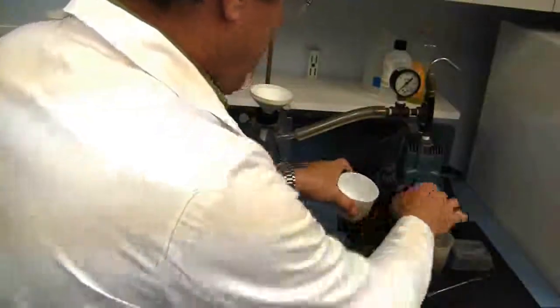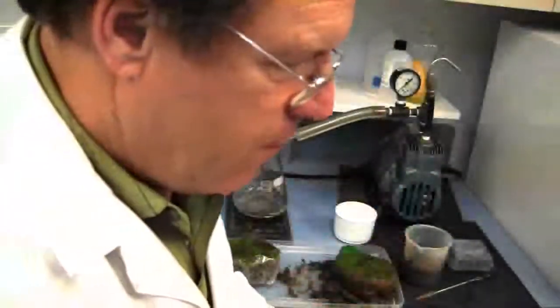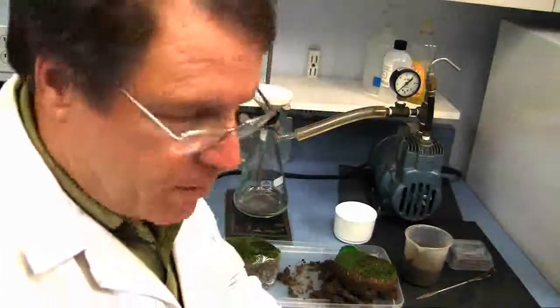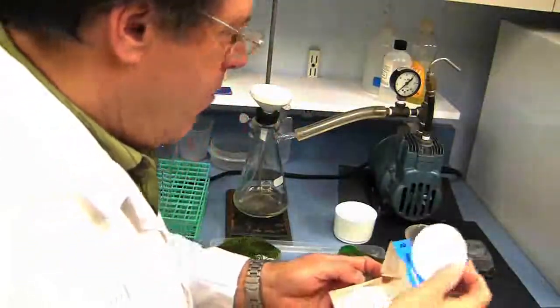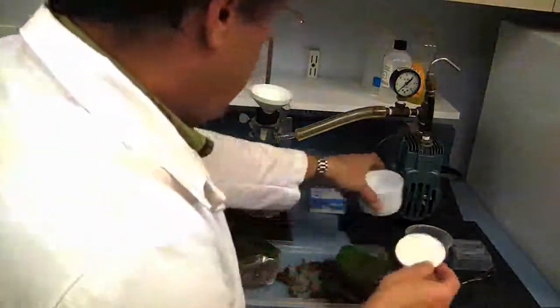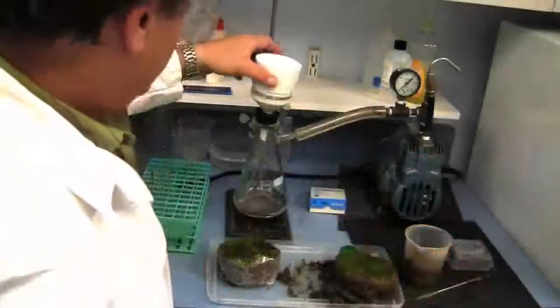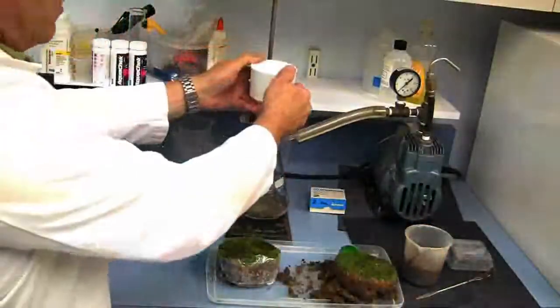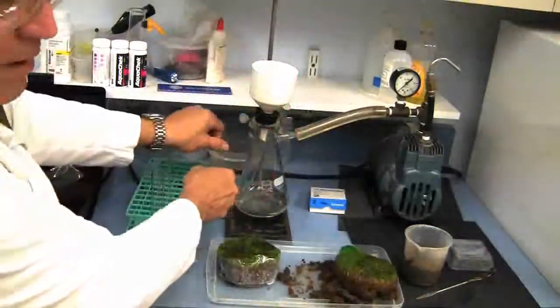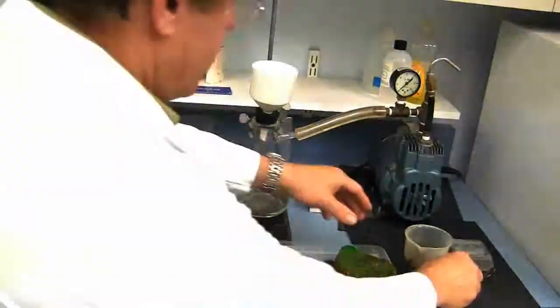And we take a Wattman No. 2 filter. It's just a piece of filter paper. And we're going to go ahead and run that onto the vacuum flask. We have a test tube inside the flask to catch the solution.